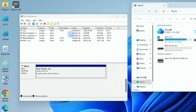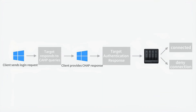Windows will automatically assign a drive letter. You can now use this NAS volume just like a local hard drive. By default, iSCSI doesn't require login credentials, so any device on the LAN can connect directly. To prevent unauthorized access, enable CHAP authentication.